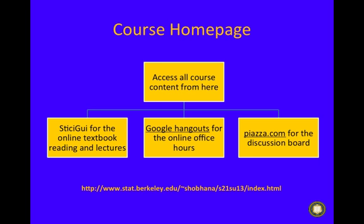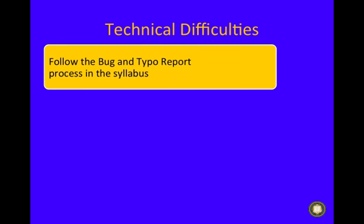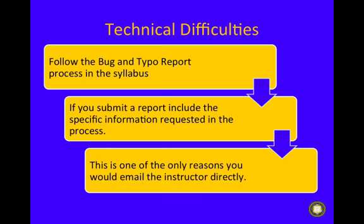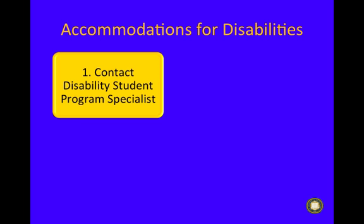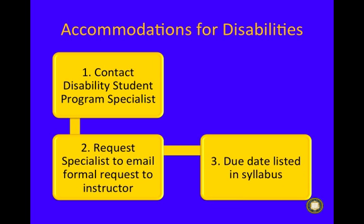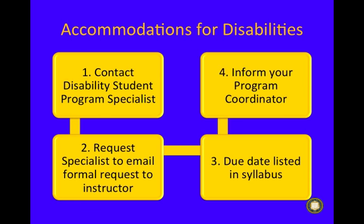You'll want to sign up to join the class at Piazza.com. For technical difficulties, follow the bug and typo report process in the syllabus in your course. If you submit a report, include the specific information requested in the process — this is one of the only reasons you would email the instructor directly. Students needing accommodations for disabilities for the final need to contact their disabled student program specialist and have them email a formal request to the instructor by July 26. Please also inform me if you need any accommodations.